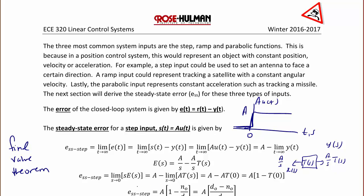Using the final value theorem, that's the limit as s approaches 0 of sE(s), or A minus the limit as s approaches 0 of AT(s). So all of that simplifies to the equation that we're going to use in class, but I wanted to show you where it came from first.